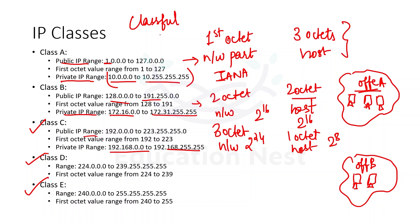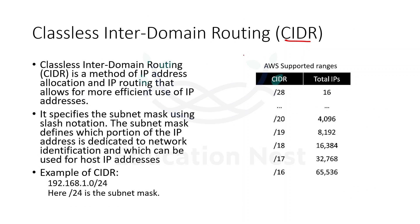What is the limitation of this? We have to go with specific subnet masks — if we use a class A IP address range, then we can only have a network part of 8 bits. But what if I wanted 9 bits or 10 bits? I want to decide on my own how many bits should represent the network and how many bits should represent the host. So for that we use CIDR — it is the method of IP address allocation which is more efficient.